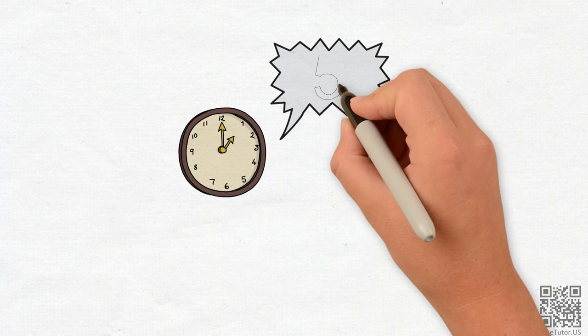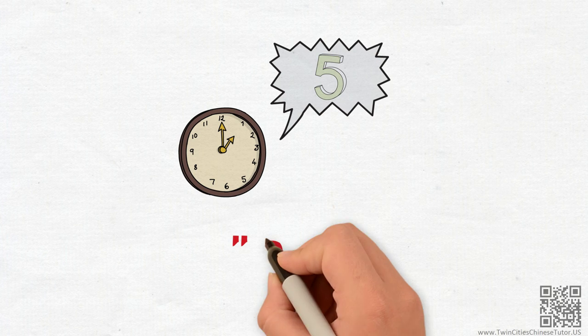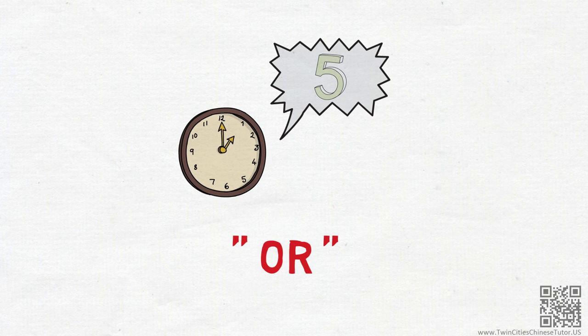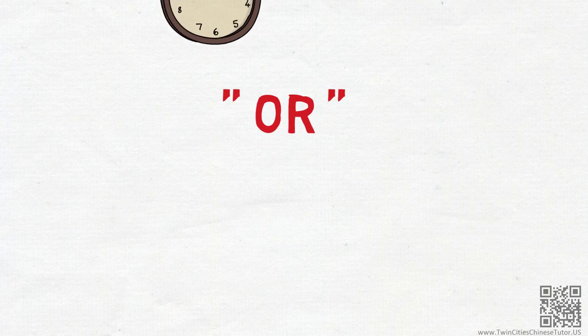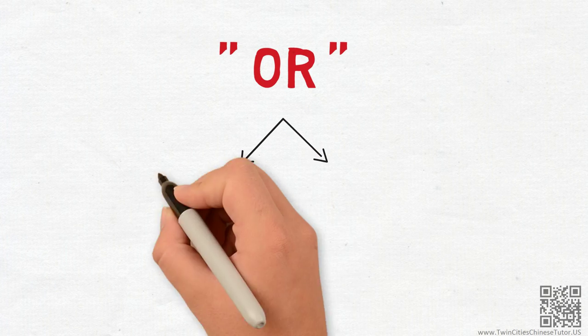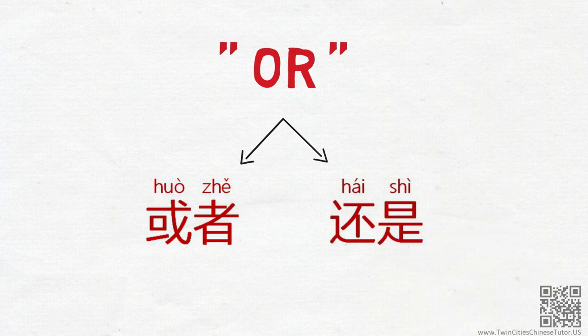In the next couple of minutes, let's learn about different ways of saying OR in Chinese. There are many words to express OR in Chinese. The most common two are 或者 and 还是. Many beginning students tend to mix up these two words. Actually, they are quite different.